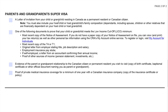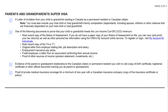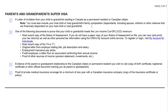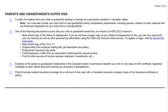For parents and grandparents super visa: number one is a letter of invitation from your child or grandchild residing in Canada as a permanent resident or Canadian citizen. You must also include your host child or host grandchild's family composition, dependents including spouse, children, or other relatives financially dependent on your host child or grandchild. Number two is one of the following documents to prove that your child or grandchild meets the low income cutoff minimum. The most recent copy of the notice of assessment — if you don't have a paper copy, you can view and print your tax returns and other personal tax information using the CRA's My Account Online Services.